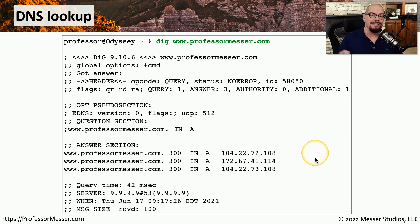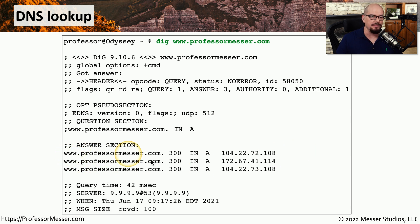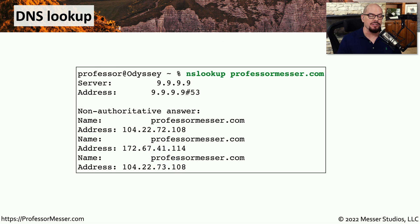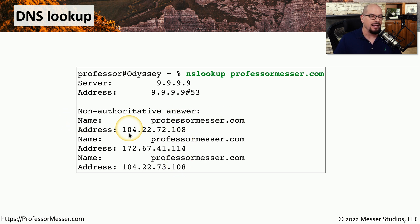The reason there are three different addresses for my web server is for redundancy. If one of those IP addresses is no longer available, your device can use any of these other IP addresses to communicate back to www.professormesser.com. If you're not on a system that supports the DIG command, you can use nslookup professormesser.com. This will go out to your locally configured DNS server and provide answers, and you can see the results show exactly the same three IP addresses.